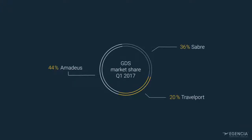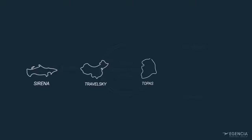In some markets, local systems exist. This is the case in Russia with Serena, China with TravelSky, South Korea with Topaz, and Japan with Axis and Infini.